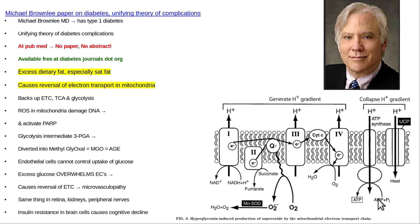This video is about Michael Brownlee's paper on diabetes — the unifying theory of complications of diabetes. This is a major academic achievement. This is one of the most beautiful papers I've ever read in my life. It's a work of genius. This guy is an absolute genius. He deserves a Nobel Prize.